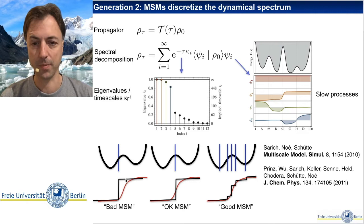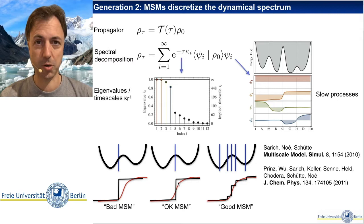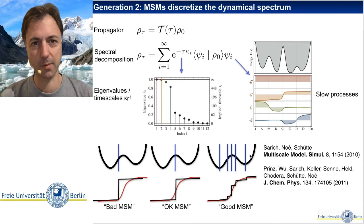If we place the boundary between the two clusters perfectly at the transition state, we get a pretty good MSM, but there is still a significant error. We will do an even better job by using more than two states — separating the transition process into finer steps even though there are really just two metastable states. With more states we can approximate the eigenfunction with more than one step, making a smaller error and getting a better approximation of the transition rate.